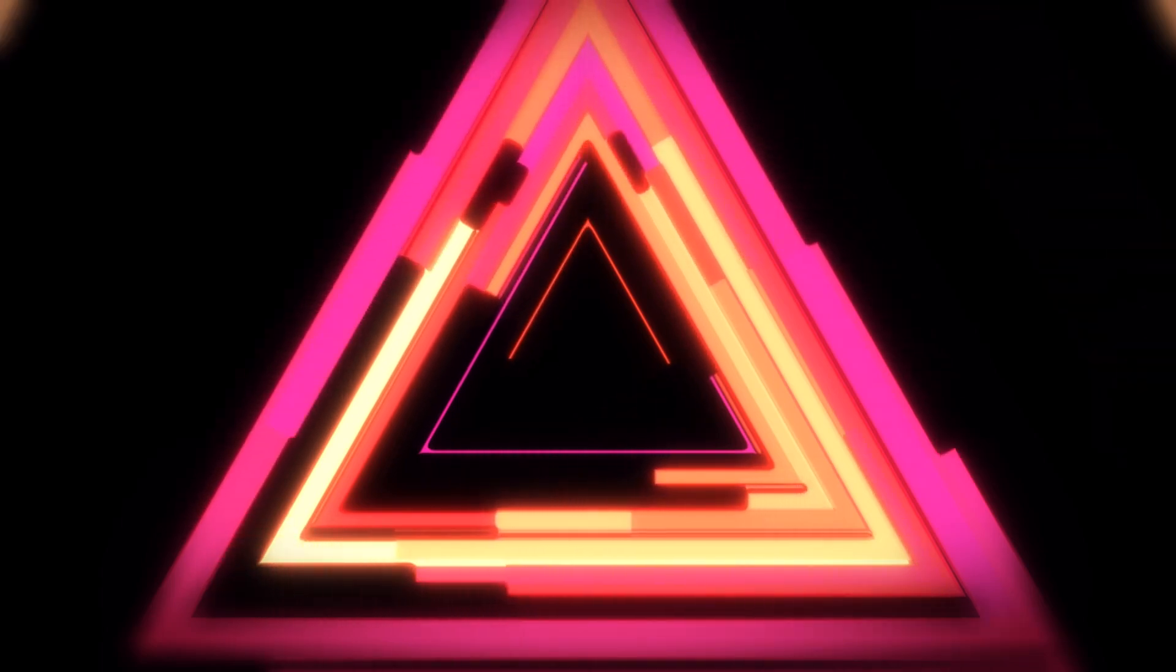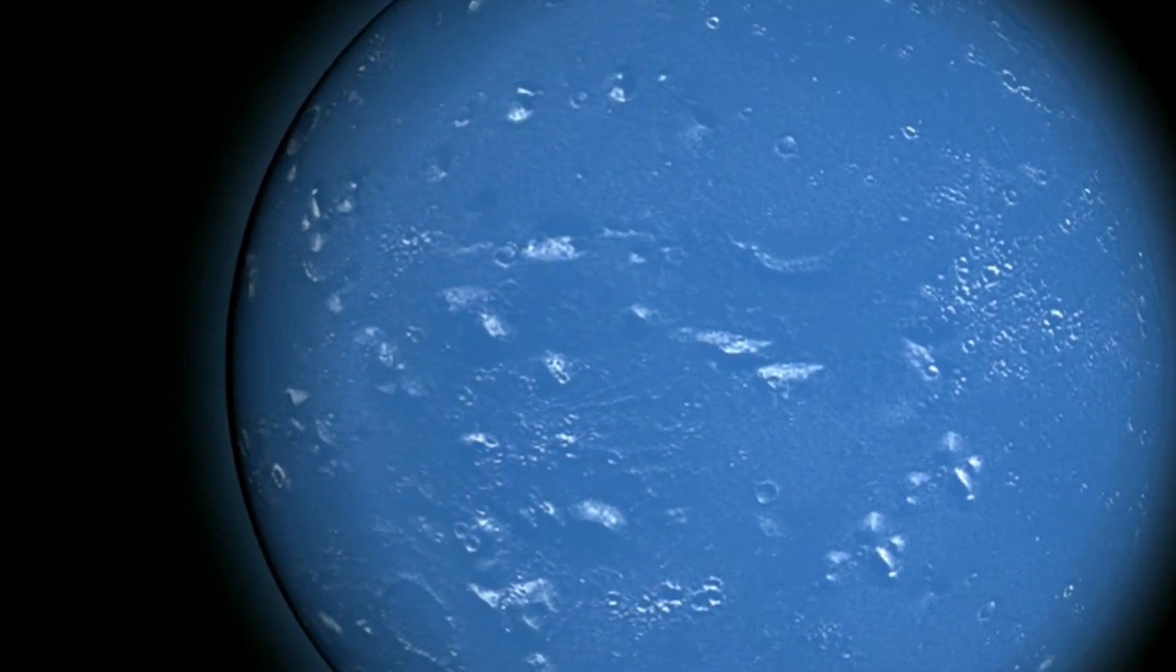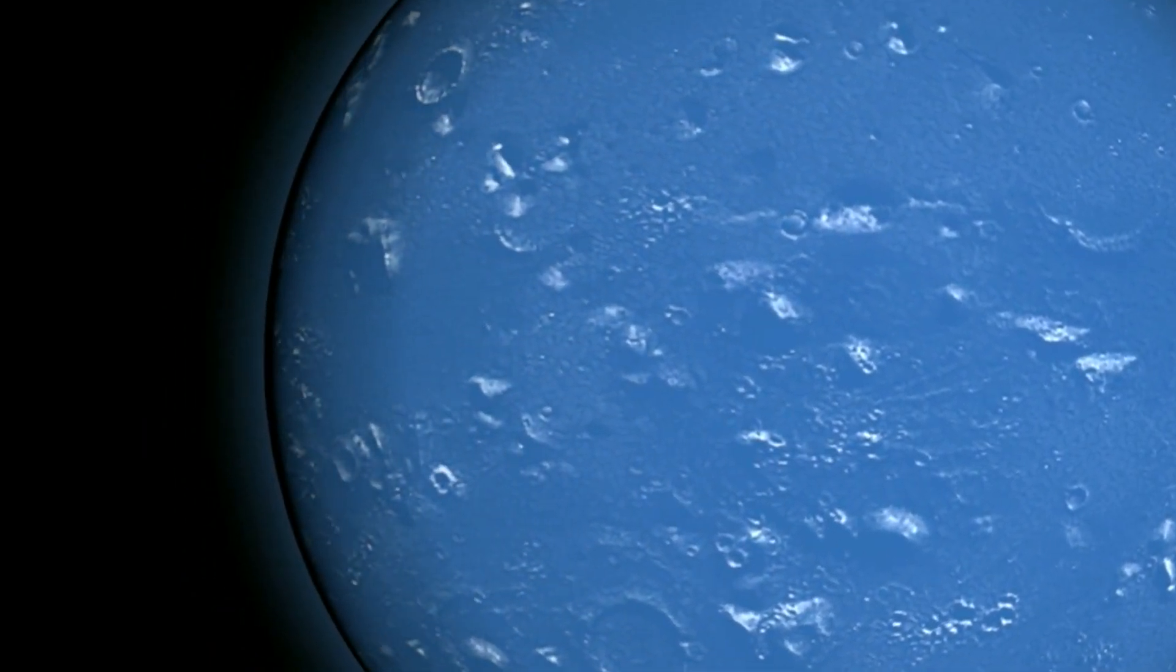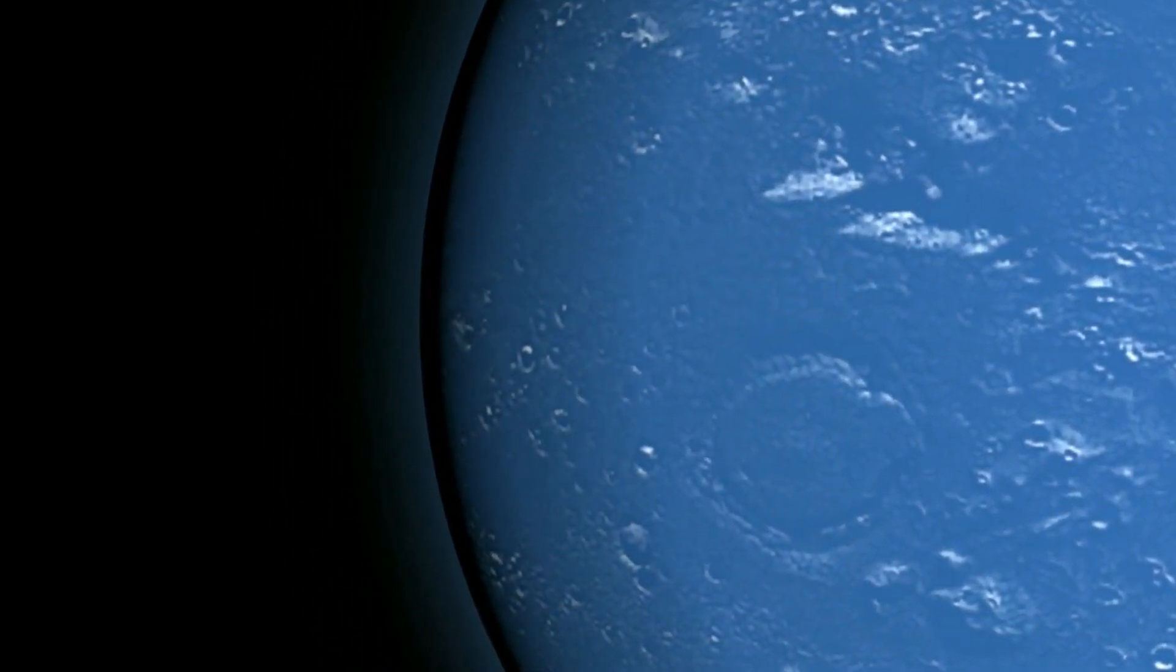GJ504b's uniqueness extends beyond its striking appearance. Unlike many gas giants found in the universe, which often orbit close to their parent stars, GJ504b resides at a considerable distance from its host, GJ504. This significant gap challenges conventional theories of planetary formation, sparking debates among scientists about the origins of this distant behemoth.